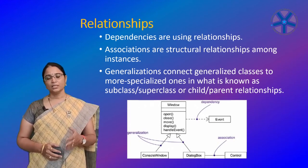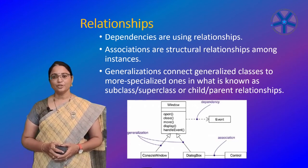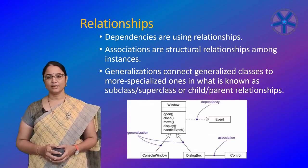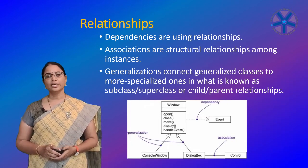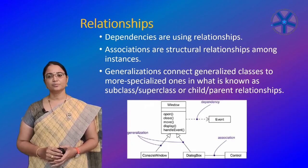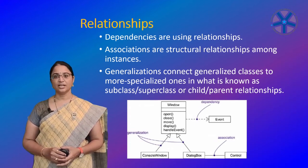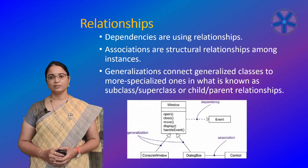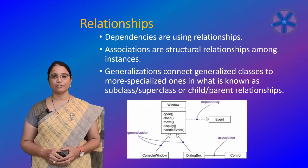In relationships, there are important terms and concepts. A relationship is a connection among things. In object-oriented modeling, the three most important relationships are dependency, association, and generalization. Graphically, a relationship is rendered as a path, with different kinds of lines used to distinguish the kinds of relationships.